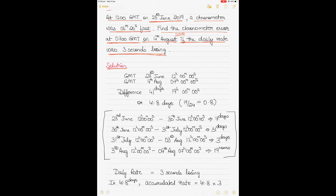As the question says, it's GMT 23rd of June, 1200 hours, and you have to find the error for GMT 4th of August, 0700 hours. From 23rd June 1200 hours to 4th August 0700 hours is 41 days and 19 hours, which is also equal to 41.8 days. That's because 19 hours divided by 24 hours equals 0.8 of a day, so 41 plus 0.8 gives 41.8 days.